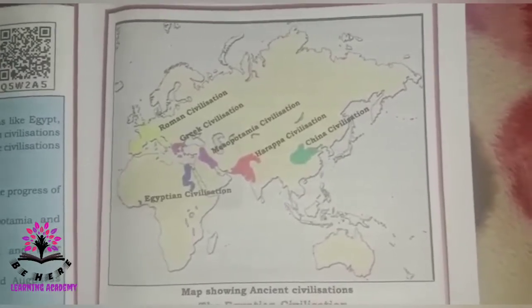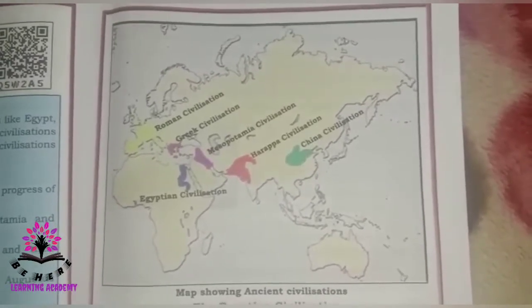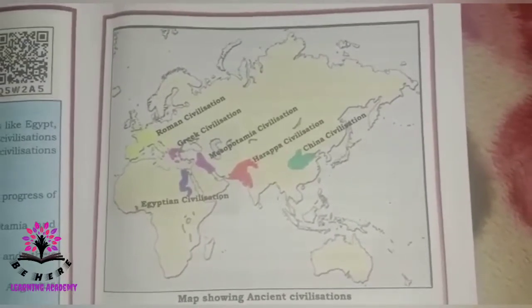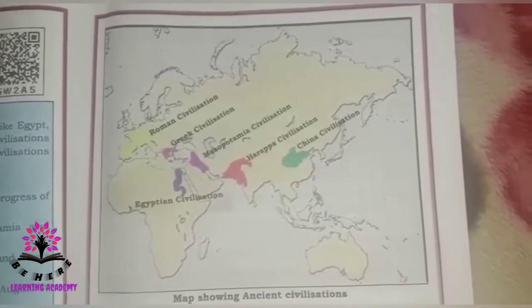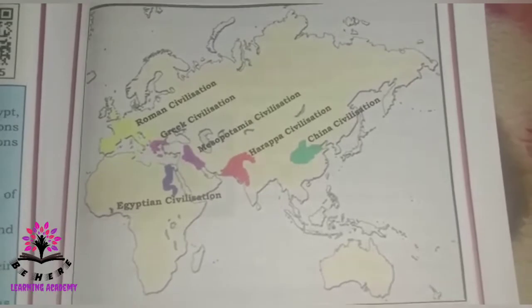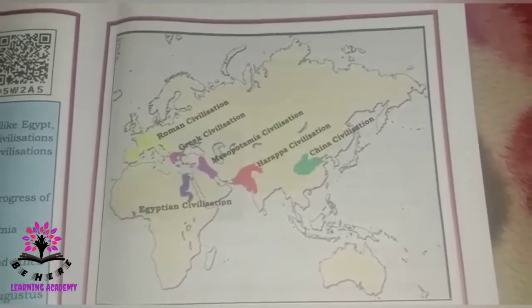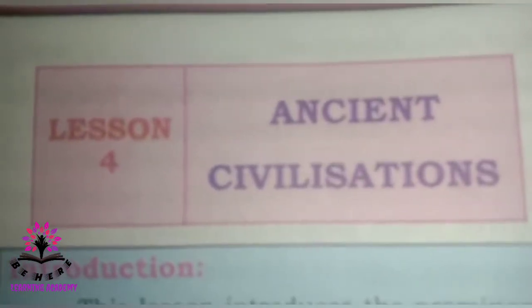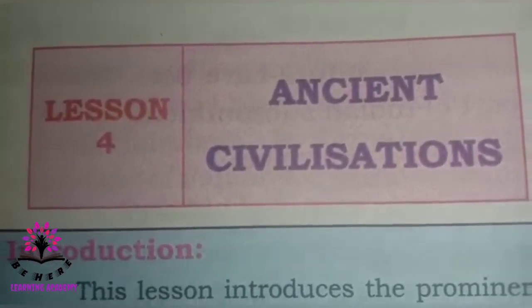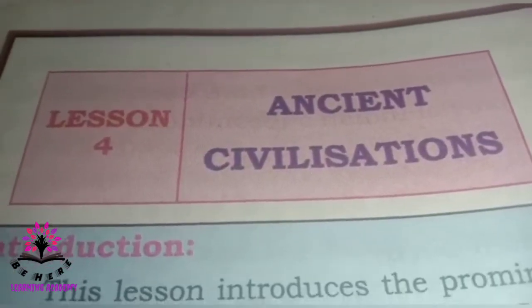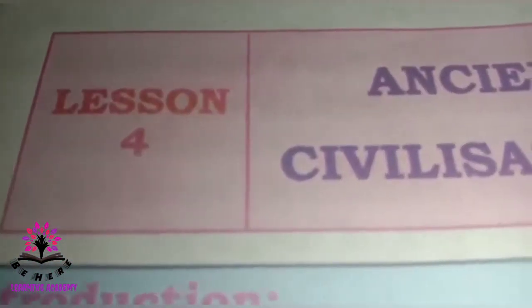What is written on that map? Egyptian civilization, Roman civilization, Greek civilization, Mesopotamia civilization, Harappa civilization, and China civilization. Do you know when these civilizations happened? No ma'am. These civilizations are called ancient civilizations, so today we are going to learn Lesson Four: Ancient Civilizations.